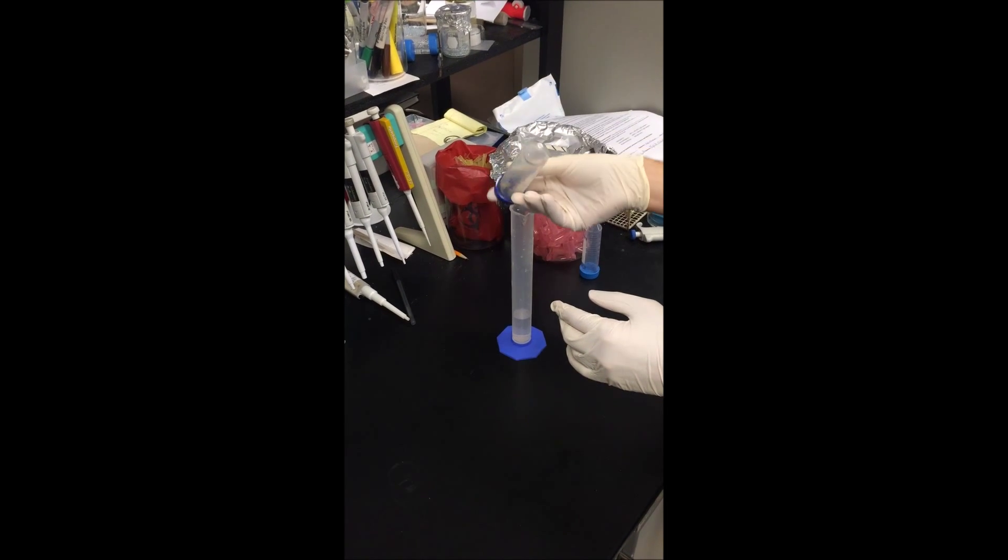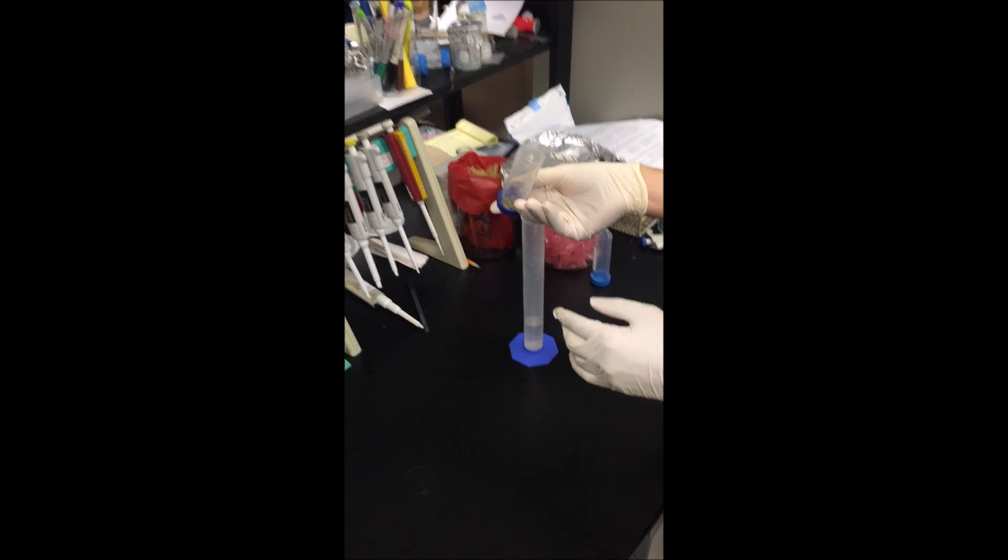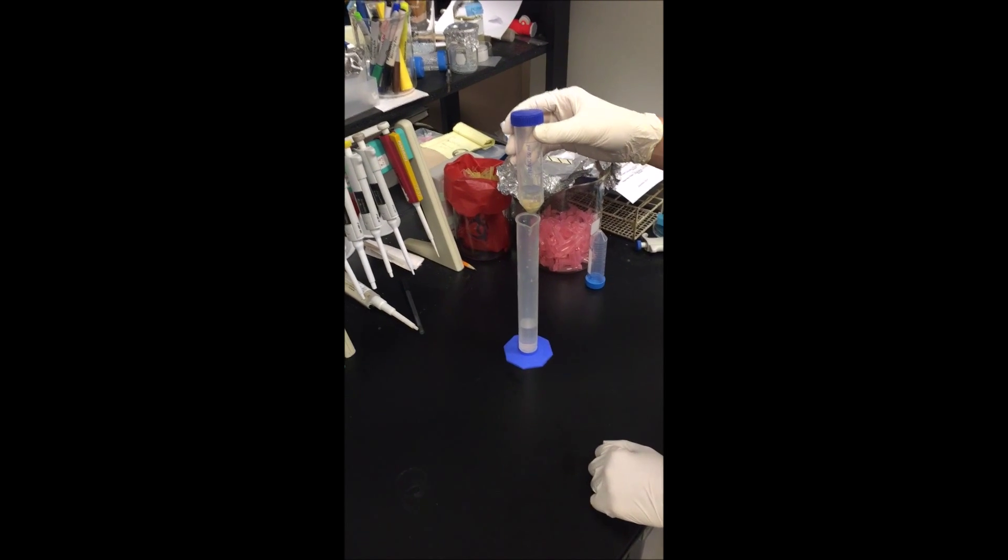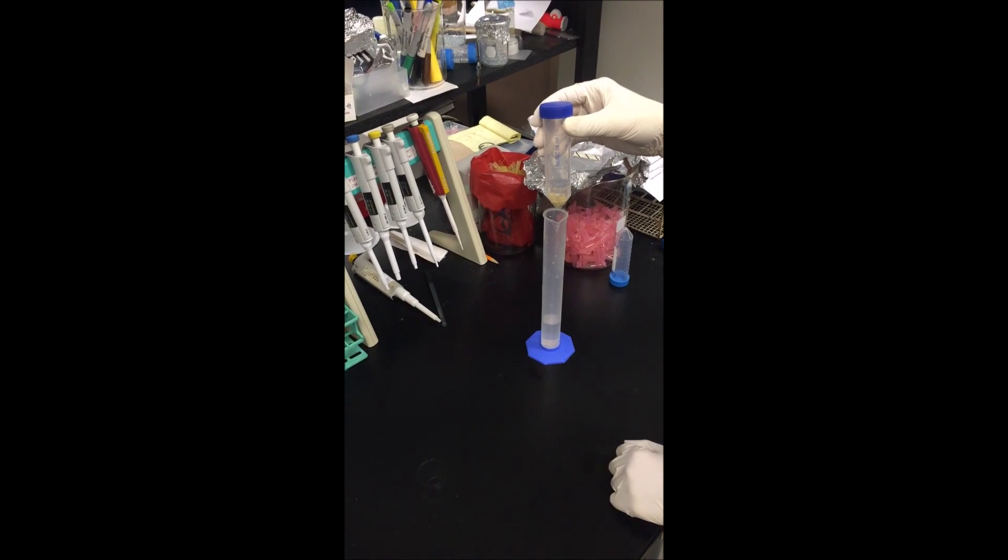From there, you invert the bleach solution containing your seeds several times. It's important to not shake them because the soybean seeds are fragile and they can break if you get too violent with it.